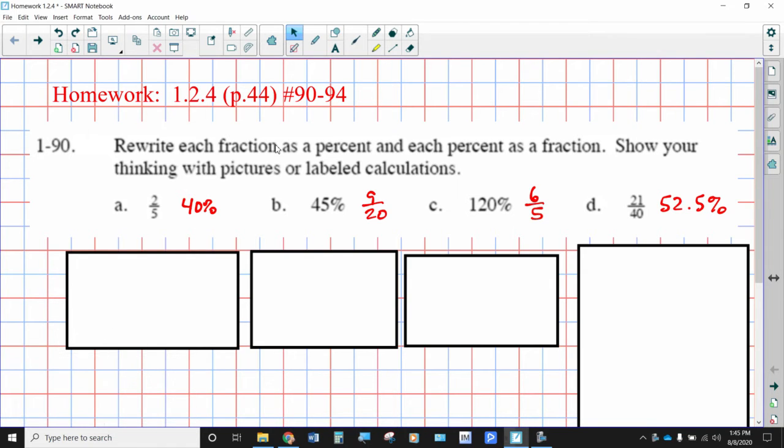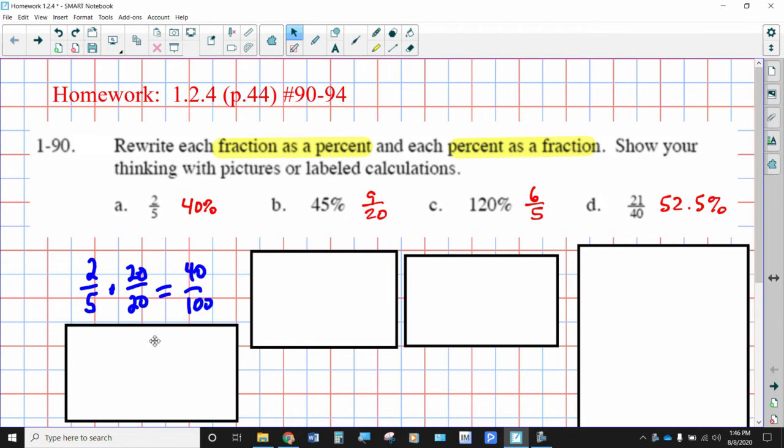Alright, let's take a look at homework problems 90-94. For this particular homework, your task is to rewrite each fraction as a percent, and if it's given as a percent, then convert it to a fraction in simplest form. So two-fifths, if we want to change that to a percent, we need to change the denominator into 100. We would multiply 2/5 times 20/20, because 5 times 20 gives you 100 in the denominator. Once we have this written as a fraction over 100, the numerator becomes your percent. This is equivalent to 40%.